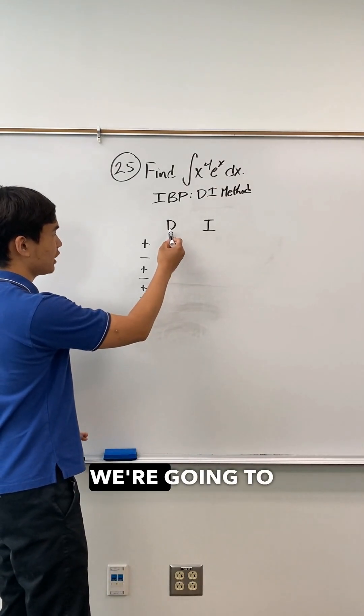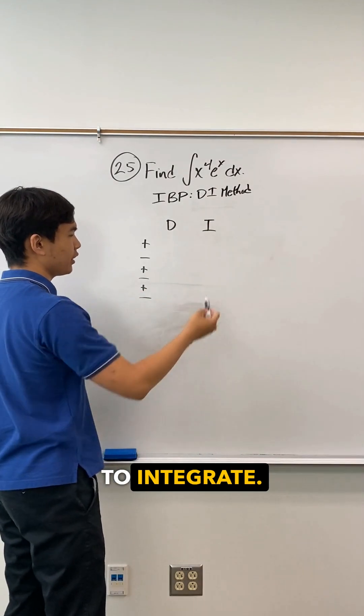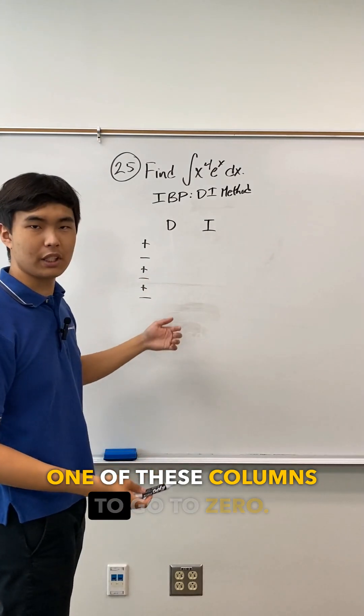Now that we have this set up, we need to pick the function we're going to differentiate and which one we're going to integrate. When we do this, we ideally want one of these columns to go to zero.